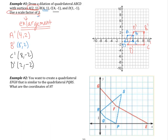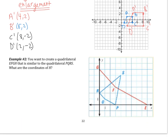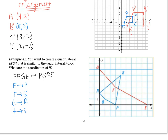Let's look at example number 2. It says you want to create a quadrilateral EFGH that is similar to the quadrilateral PQRS. What are the coordinates of H? We have EFGH similar to PQRS. From this statement, we know that E goes to P, F goes to Q, G goes to R, and H goes to S. From our figure, let's figure out what all of those coordinates are.